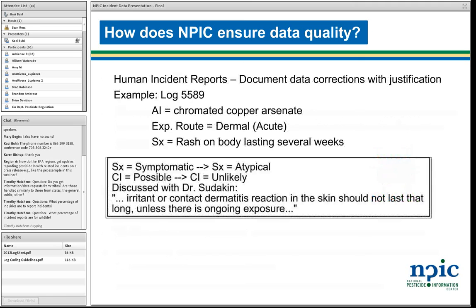We also publish human incident reports and animal incident reports — about once a month, a report comes out that shows any changes that were made in the QA/QC process, so we can hopefully not make the same mistake again. In this example, the certainty index was changed from possible to unlikely because it was discussed with Dr. Sudeikin, who found that an irritant or contact dermatitis reaction in the skin should not last that long unless there's ongoing exposure. So the coding was changed to unlikely.